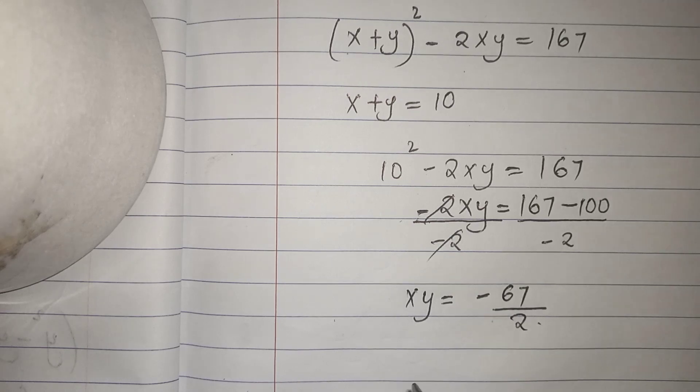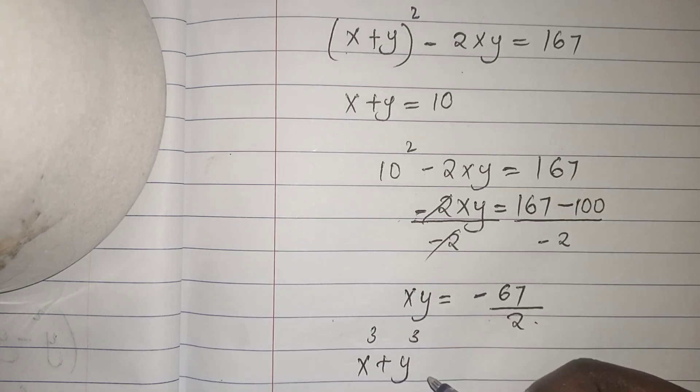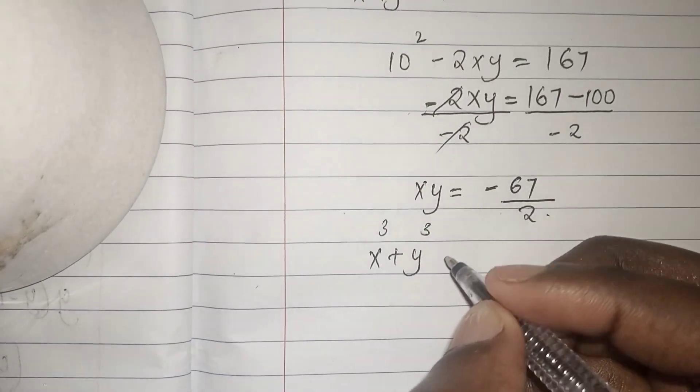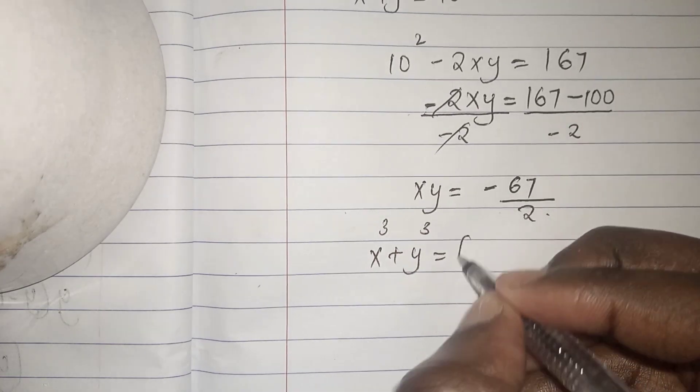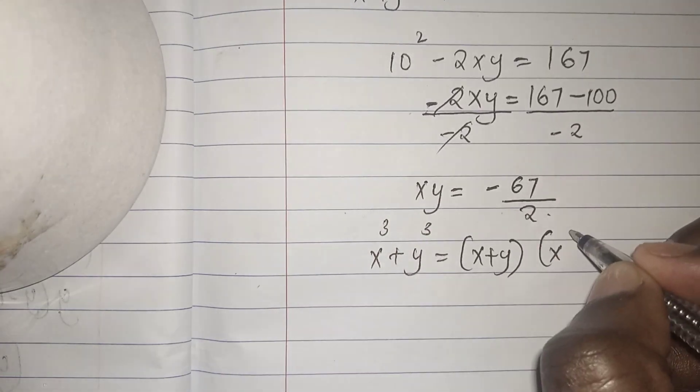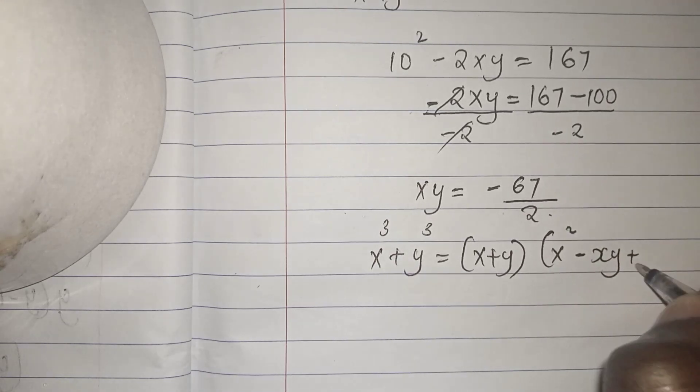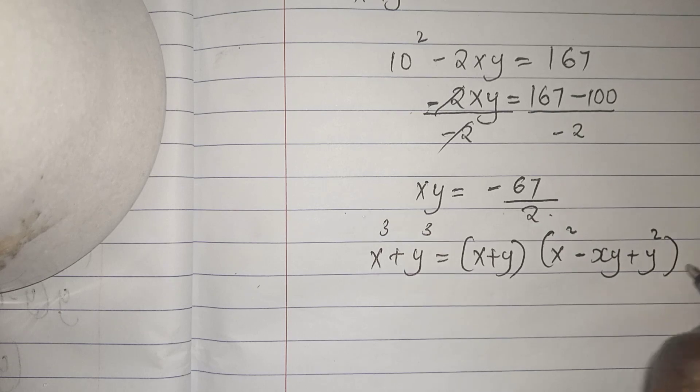We have been asked to solve for x cubed plus y cubed. So we can express this as x plus y into bracket x squared minus xy plus y squared.